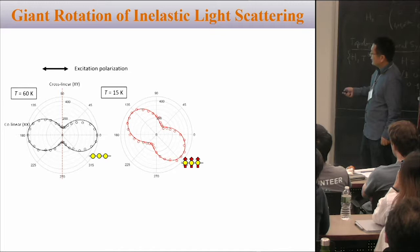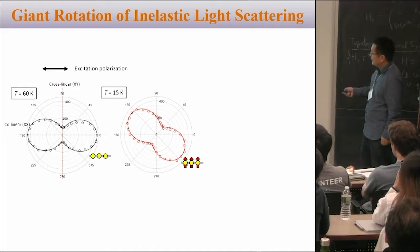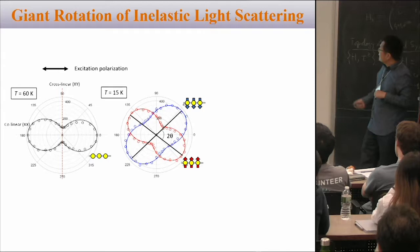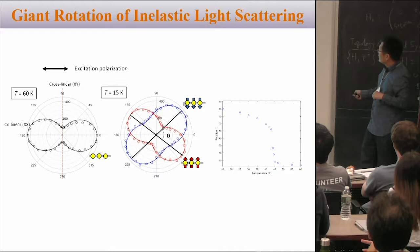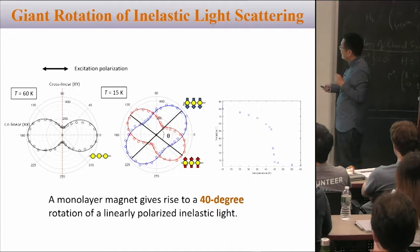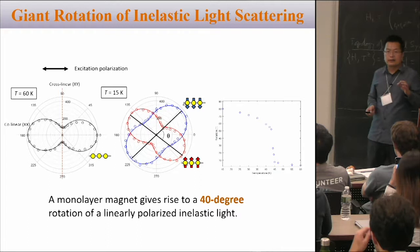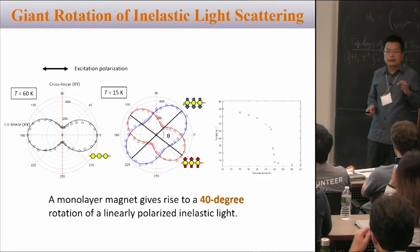With magnetic order pointing up, the linear polarization rotates. When we flip the magnetization pointing down, this rotation angle goes in exactly the opposite direction. We can map out this rotation angle as a function of temperature, and it clearly correlates with the magnetic order. What I want to emphasize is that this rotation angle is quite large — 40 degrees — which is a remarkable number, because Kerr rotation is usually on the order of milliradians, at least three orders of magnitude smaller than this.